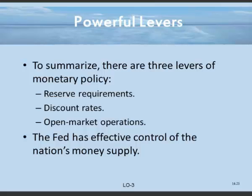Primarily, monetary policy does so through affecting interest rates, and then that affects the level of investment. There's a multiplier effect that takes place on GDP via investment. As we've seen, the three main tools that the Federal Reserve has are the reserve requirement, the discount rate, and open market operations.